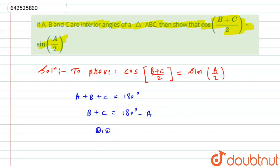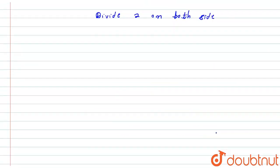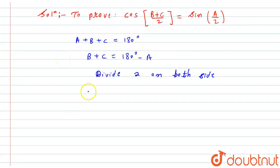Now I will divide by 2 on both sides. What I will get is (B+C)/2...